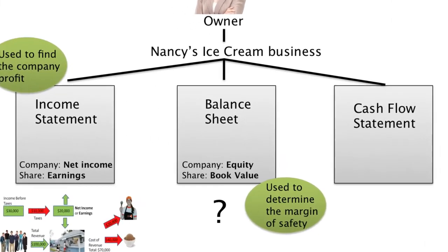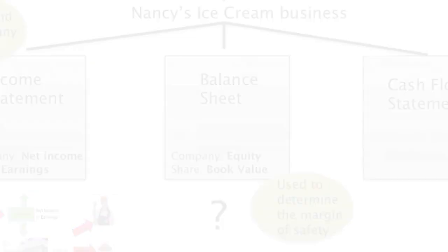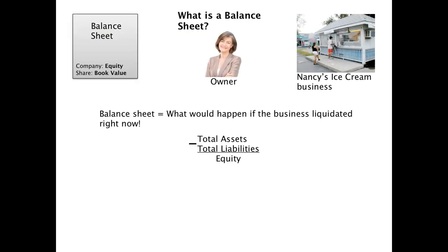What we're going to focus on right now is the balance sheet, which is used to determine our margin of safety among other things. The best way to understand the balance sheet is to ask yourself: what would happen if the business would liquidate right now? Liquidate means you're going to basically turn the entire company into cash — you're going to end it, kill it. What is it worth right now? In order to do that, you have to sum up all of your assets, sum up all of your liabilities, and the difference when you subtract the liabilities from the assets is your equity. Let's demonstrate that.